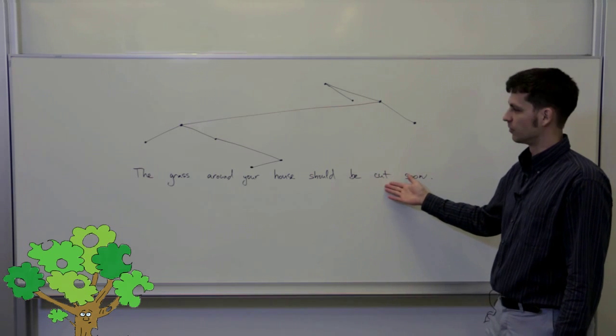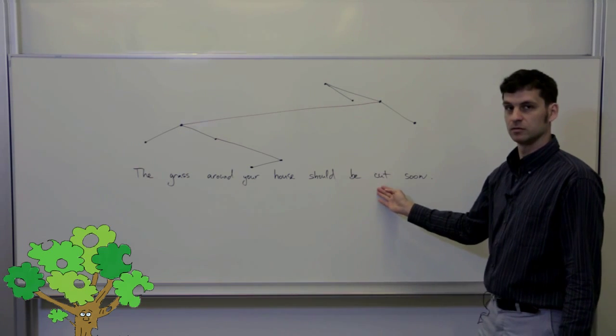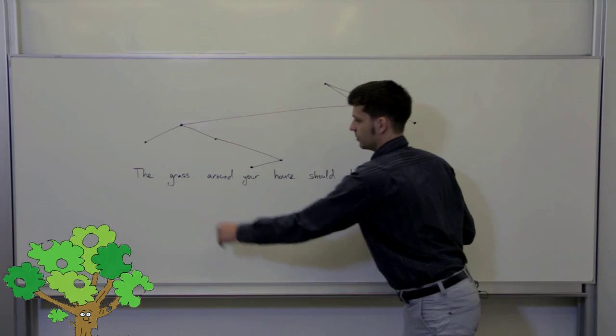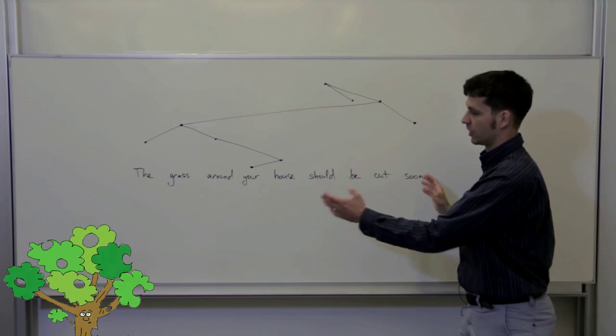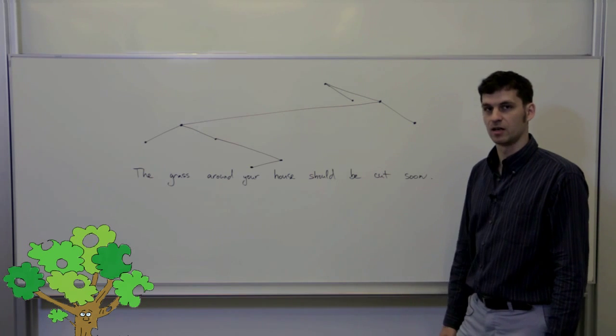The problem with phrase-based MT is that the word 'grass' and the word 'cut' are very far from each other. So they will not be captured in one single phrase. And therefore, the phrase-based MT is very likely to mistranslate the cutting.